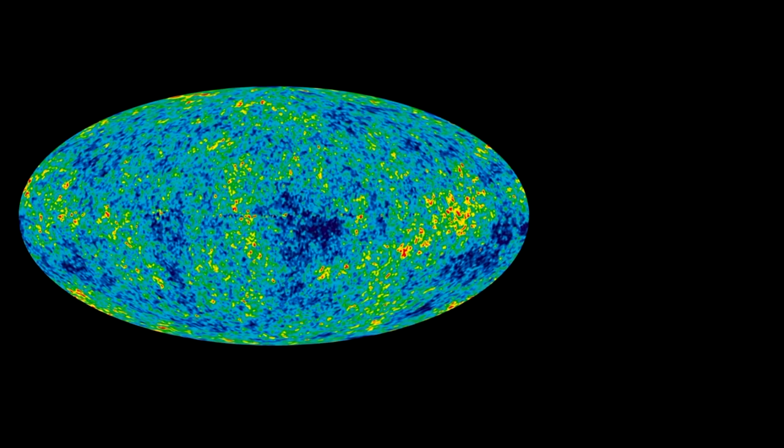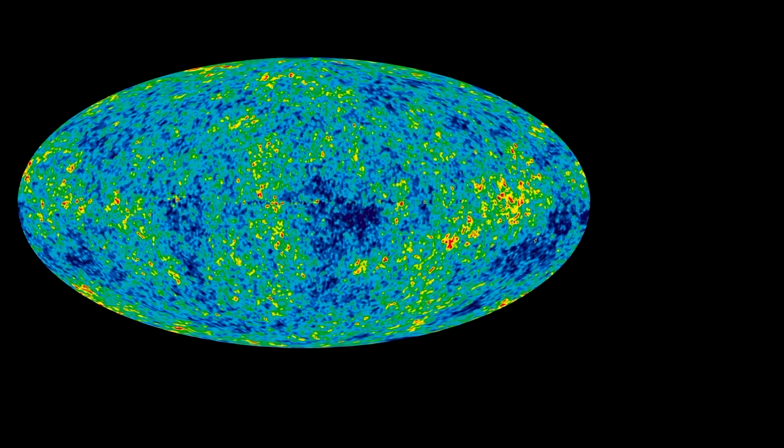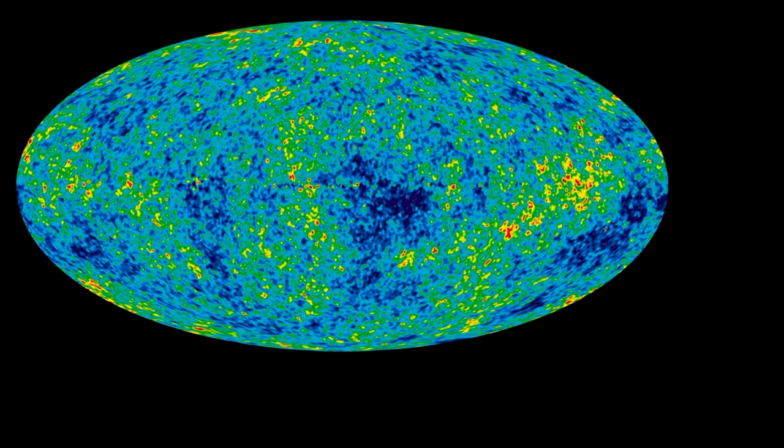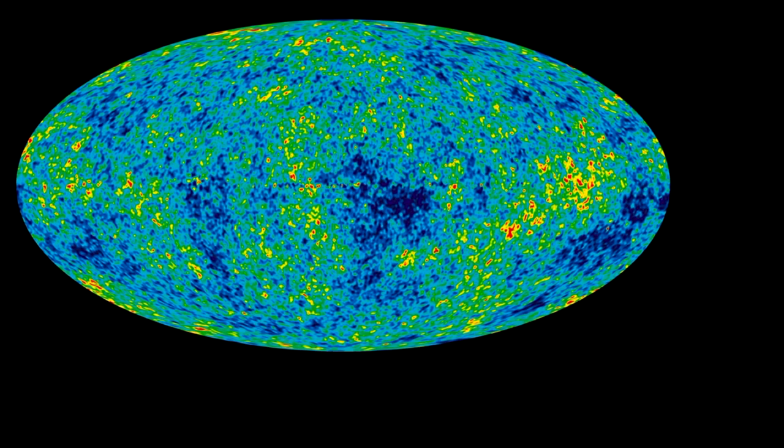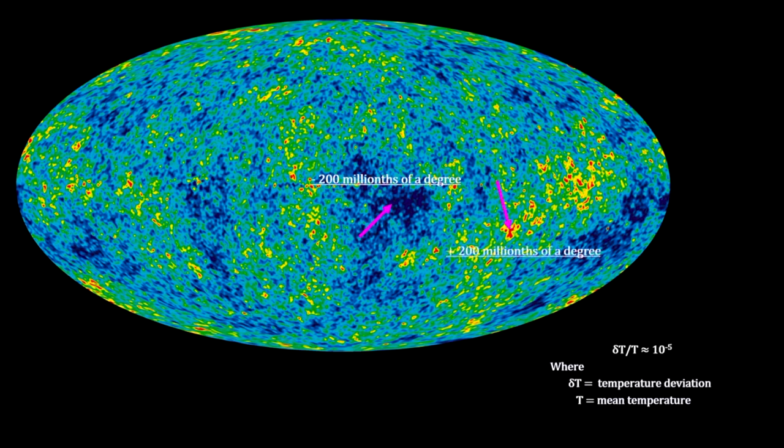The Planck satellite measurements detected small amounts of temperature deviation. The image uses color to show variations from the average with blue for minus 200 millionths of a degree through green and yellow to red, which represents plus 200 millionths of a degree. That temperature deviation comes to one part in 100,000.